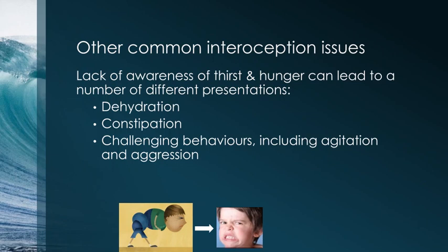There are other common interoceptive issues that can lead to challenging behaviour. Many people with atypical interoception have a lack of awareness of thirst or hunger. Research at the University of Southern Queensland on thirst and autism found that many autistics either over-drink or under-drink because they don't have a sense of thirst. If they over-drink, it's because they've learned to drink at intervals but haven't learned to regulate for hydration. Some autistic people just don't drink very much and can be significantly dehydrated.